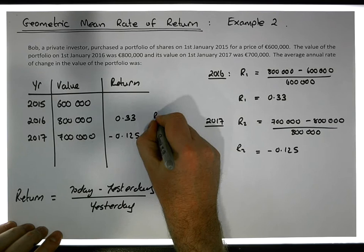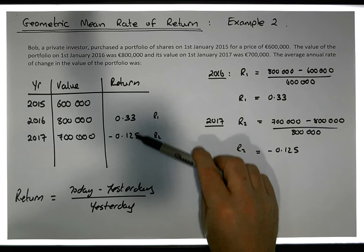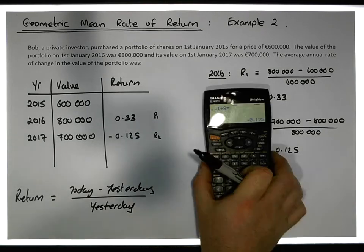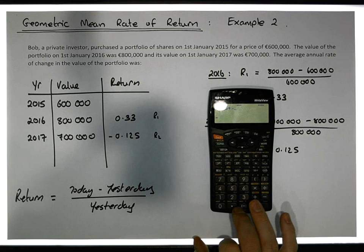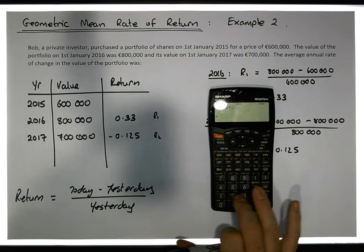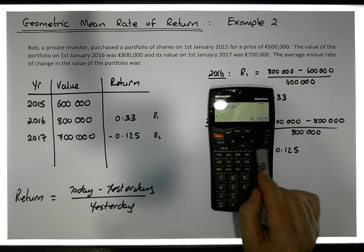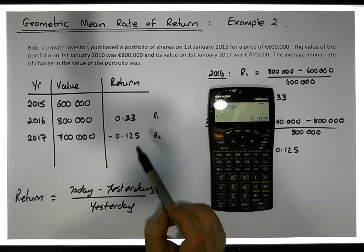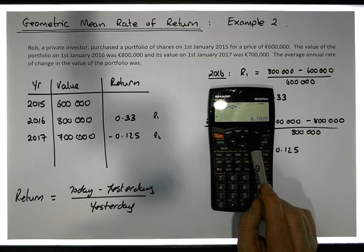Don't forget this is r1 and this is r2. We're interested in the average return. We could just calculate the average of these two values here, which would be 0.33 plus negative 0.125 divided by 2, which would give us a 10% average increase.